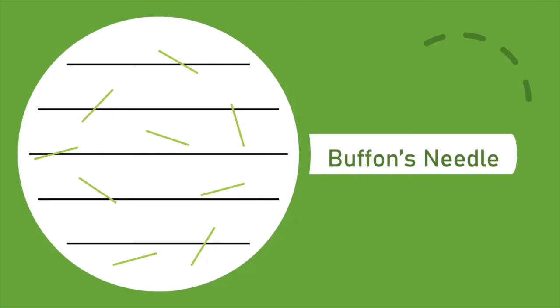The last video explored a method for approximating pi by finding the probability of a random event occurring by throwing objects. Well, this method is no different. However, instead of using dice, we're using needles.